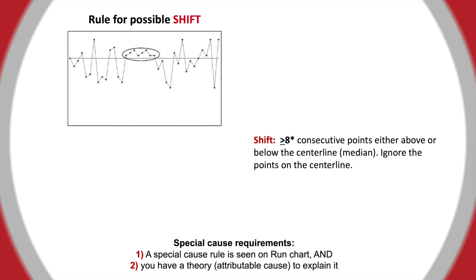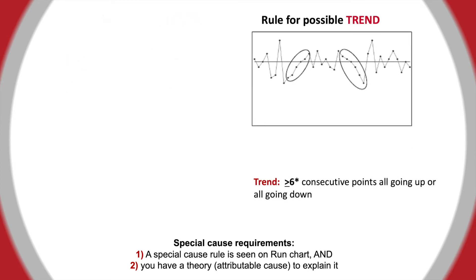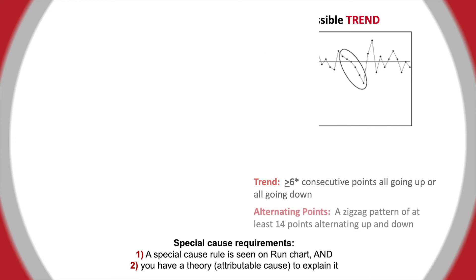A new centerline is calculated using the last eight data points. If there are six data points showing a continuous increase or decrease, this is called a trend. Investigate what's happening in the system to cause this change — this is unlikely to be a random occurrence.